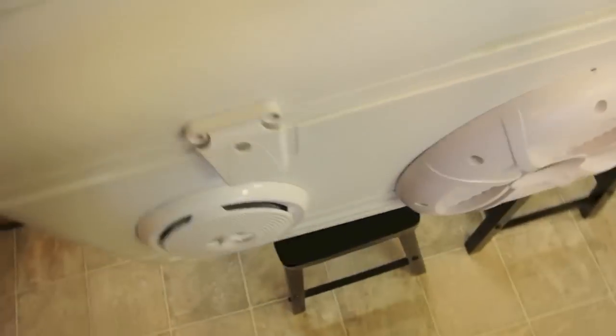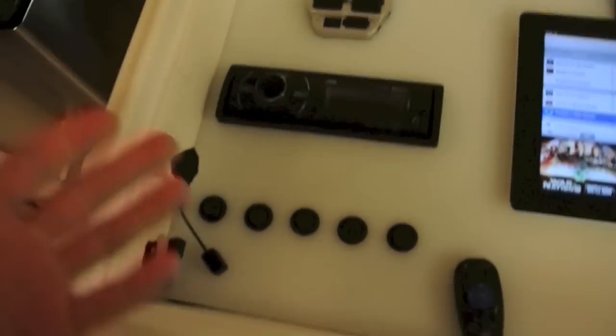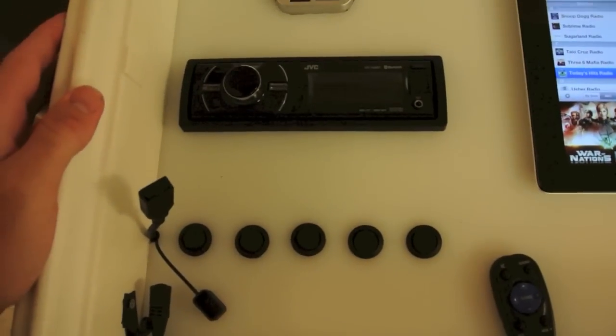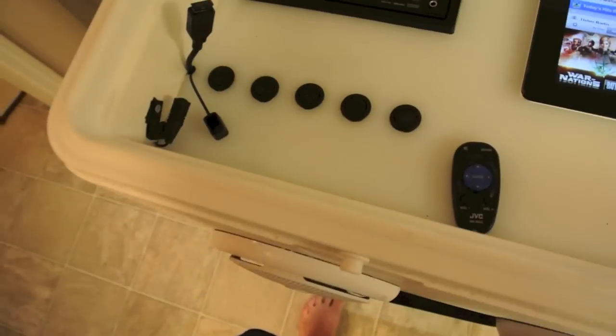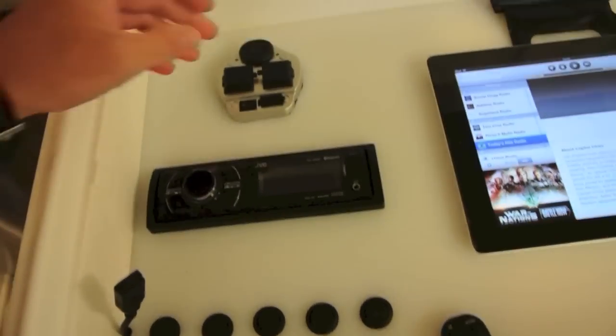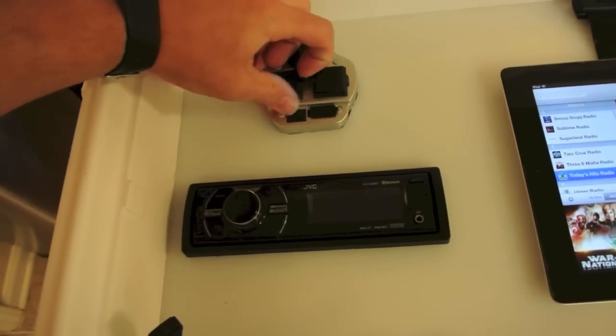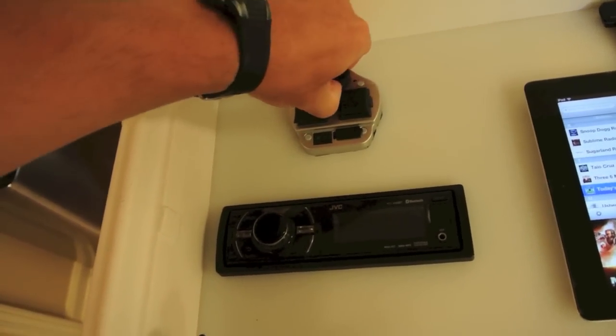And then you have access here, quick access to see the head unit and all the control switches. Inside is a generic JVC head unit I purchased at Walmart, maybe $100. What I liked about it had the Bluetooth receiver so I can link it to whatever device I want to use. And then also I installed a power inverter. It does 150 watts. So we've got two 110 outputs plus the 12 volt.